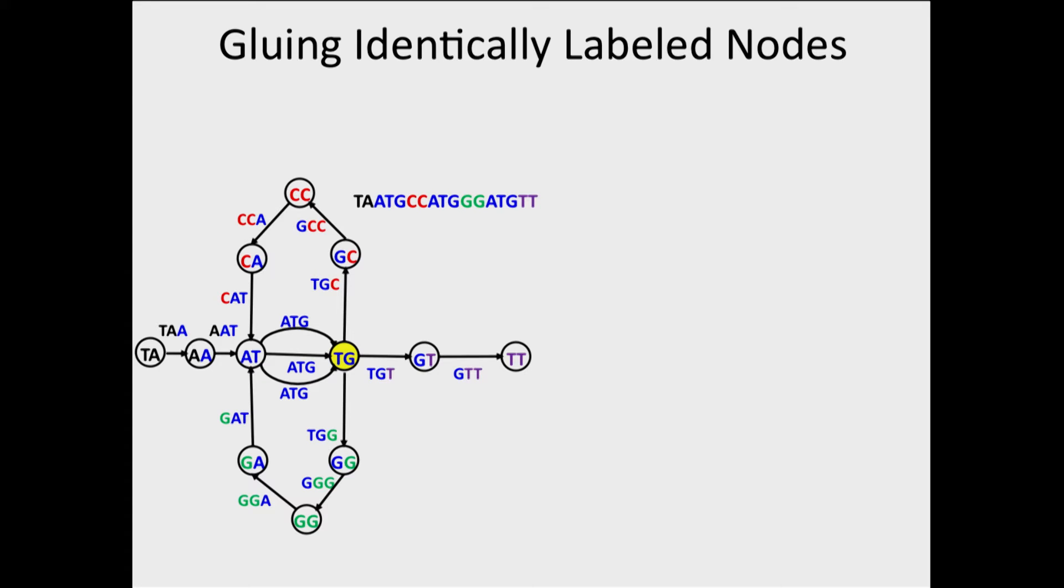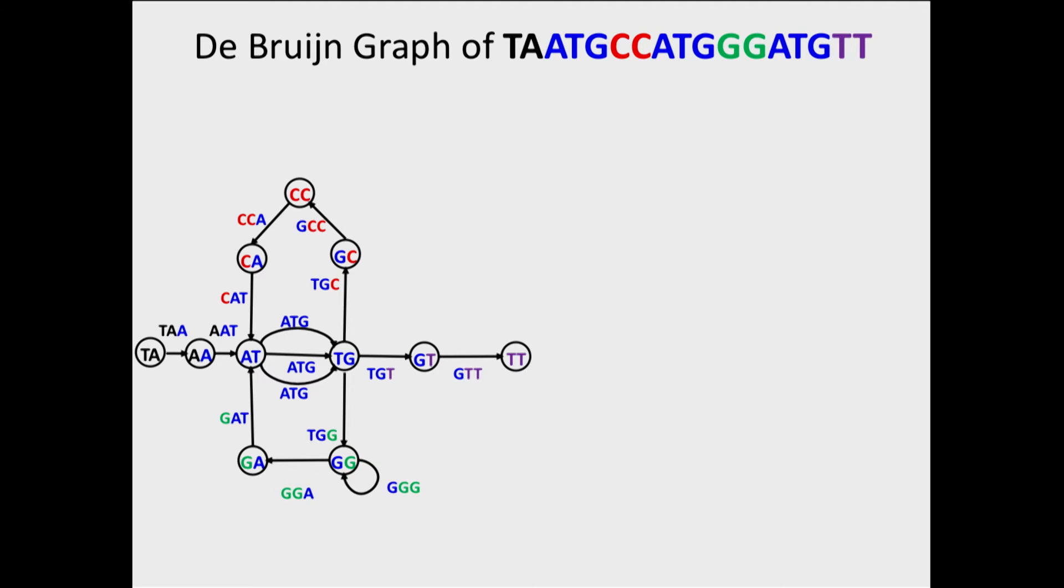Are we done? Not yet, there are two more nodes that are identically labeled. These are two nodes GC, bring them closer together, and glue them in a single node. The result is the graph that we will be studying in this lecture a lot. It is called the De Bruijn graph of a string.